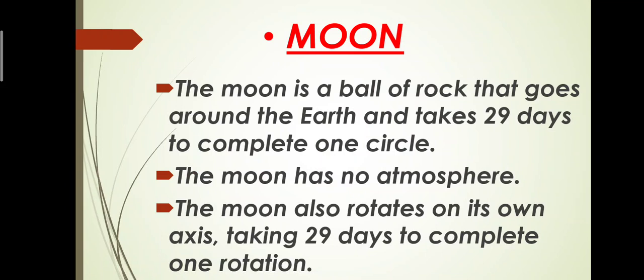What is the explanation of moon? The moon is a ball of rock that goes around the earth and it takes about 29 days to complete one circle. The moon also rotates on its own axis and it takes 29 days to complete one rotation.